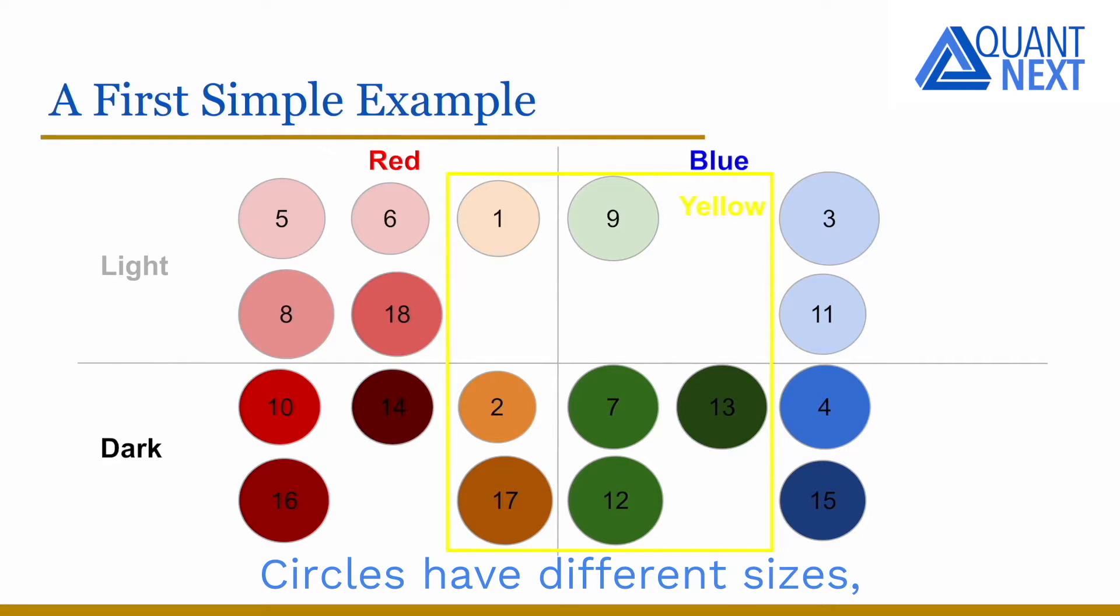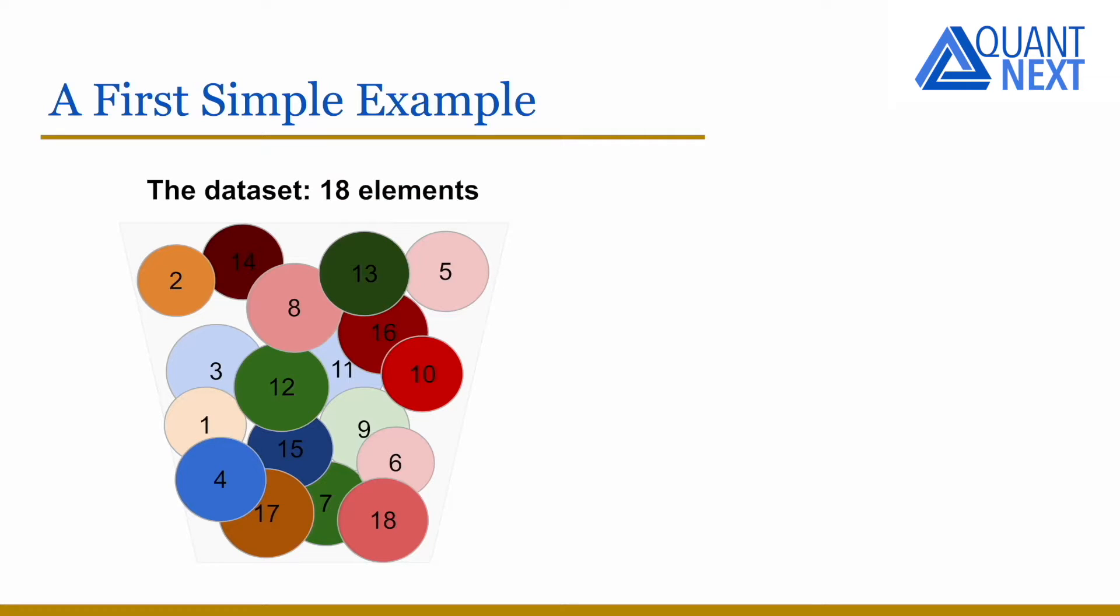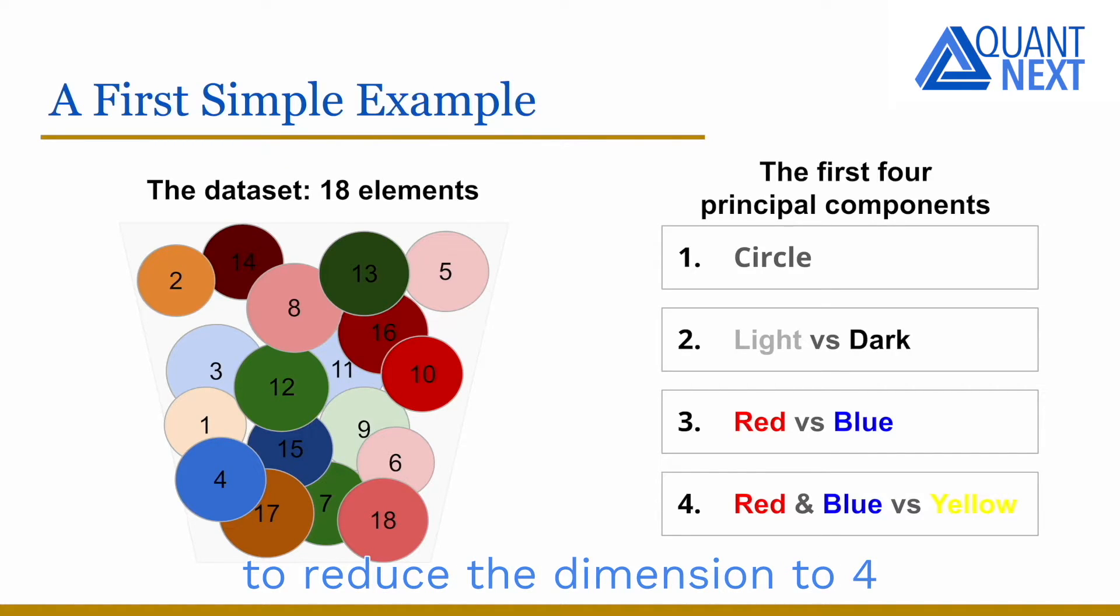Circles have different sizes, but it is a second-order characteristic compared to the one listed before. So from a dataset made of 18 elements, we were able to reduce the dimension to 4 with 4 principal components, which are the average-sized circle with positive coordinates on all elements. This is the first principal component. Light versus dark with positive coordinates on light elements and negative coordinates on dark ones.